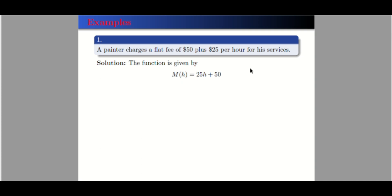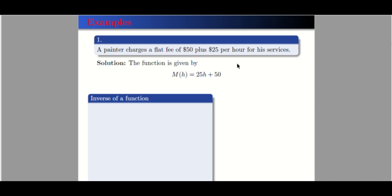Now let's find the inverse of this function. Following our steps: step one, we let m(h) equal y, so y = 25h + 50. Step two, interchange the roles of the two variables — our two variables here are y and h. So y becomes h and h becomes y, giving us h = 25y + 50.